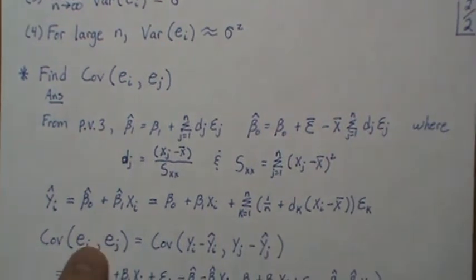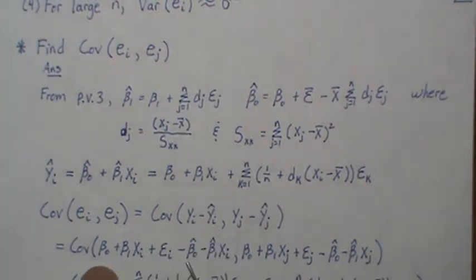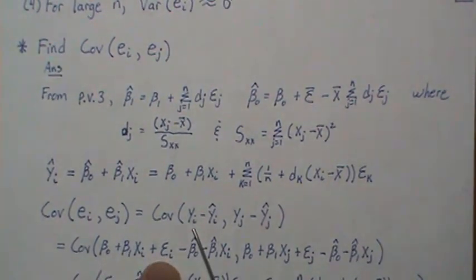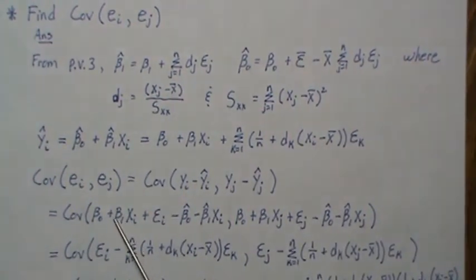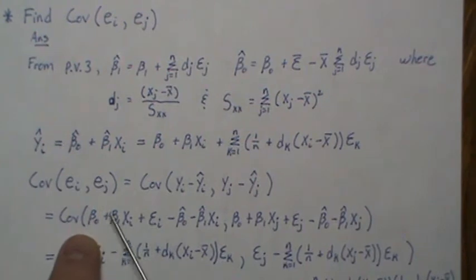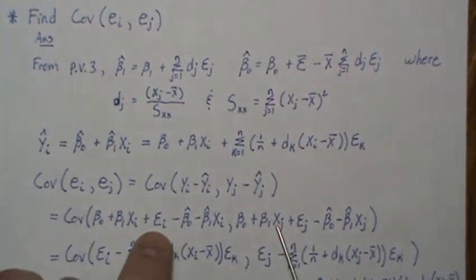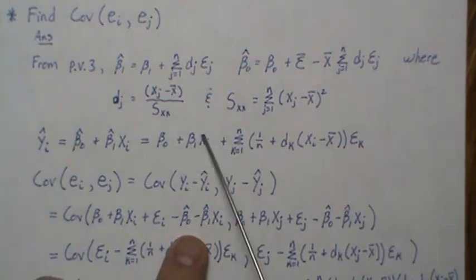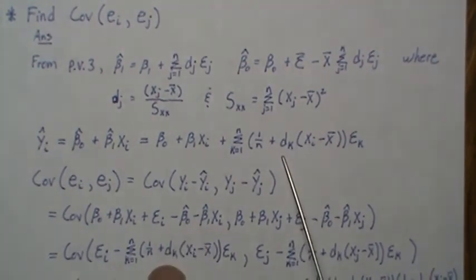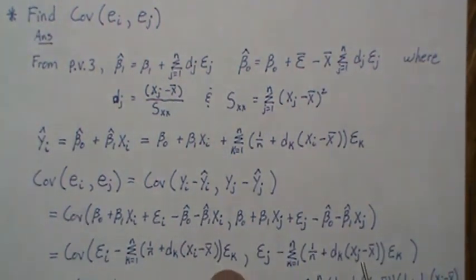Now for the covariance: we write it out, plug in Y as epsilon and the fitted line in its rewritten form. In the covariance, constant terms go away. Plugging in the fitted line expression, those constant terms vanish, leaving only the stochastic epsilon terms, with indices i and j corresponding appropriately.